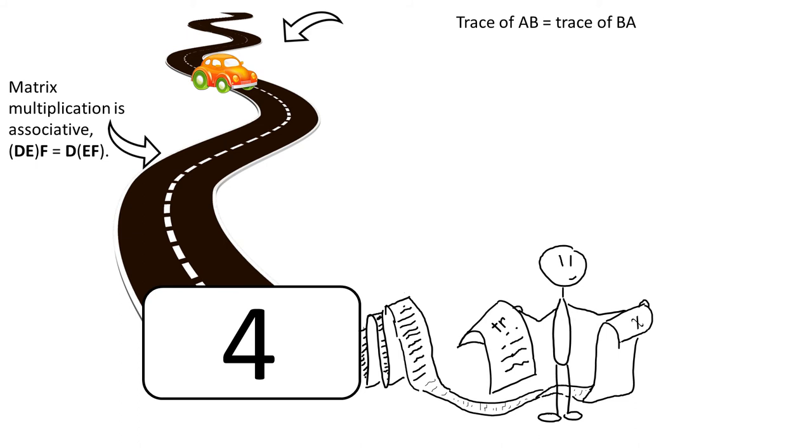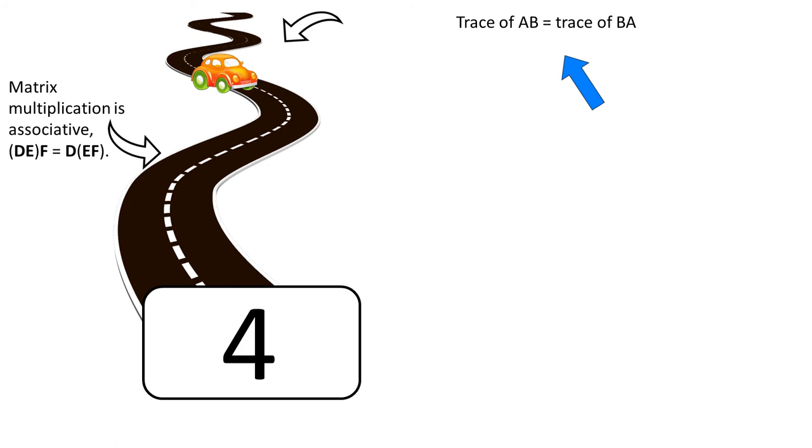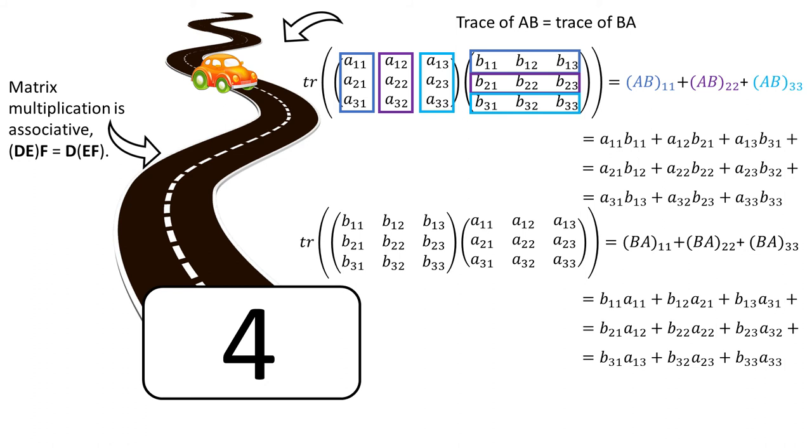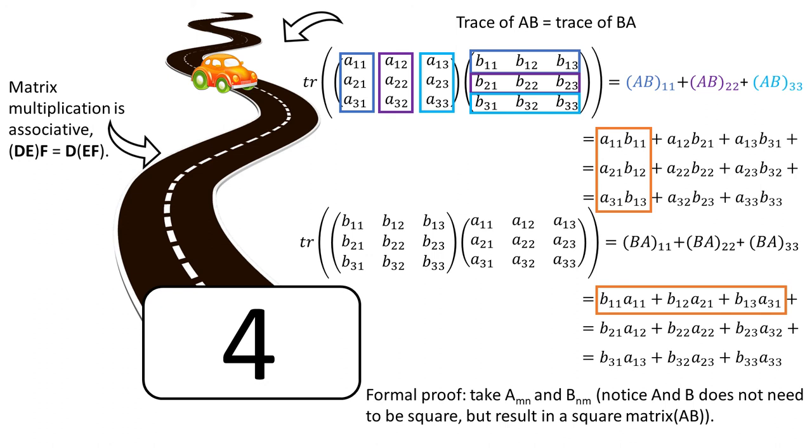So let's return to our topic. Trace of AB equals trace of BA. To show you this property, I just took two 3x3 matrices and multiplied out the terms that make the trace. Basically the trace in both cases are made of the same elements. This column is exactly this row. If you want to perform a formal proof, then take two matrices that can be multiplied from both sides and make the multiplication more generic by choosing letters as dimensions.